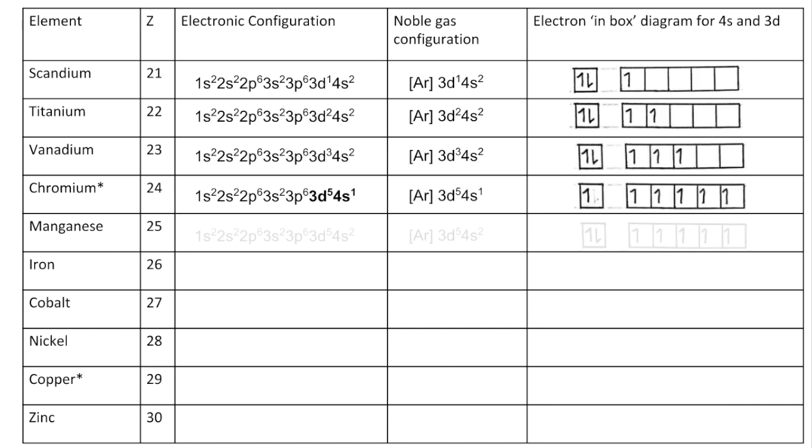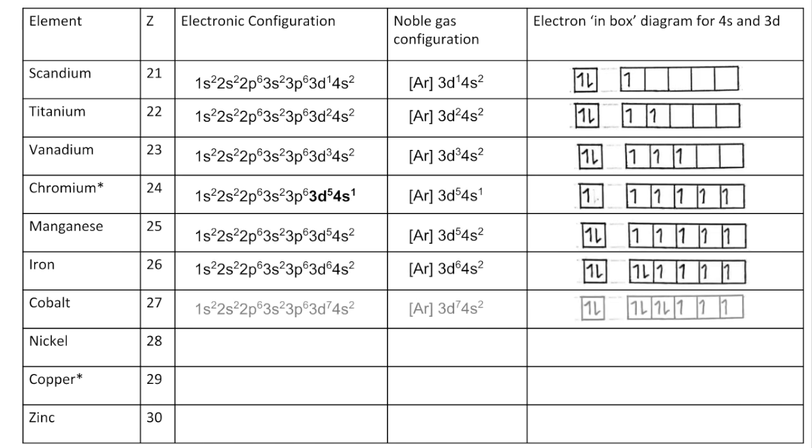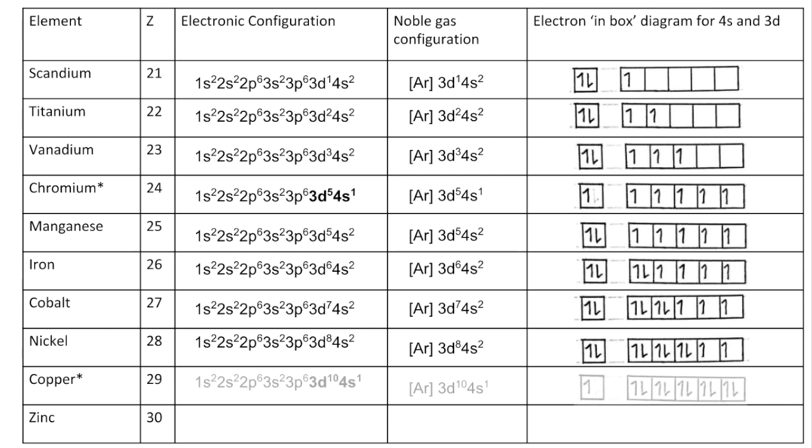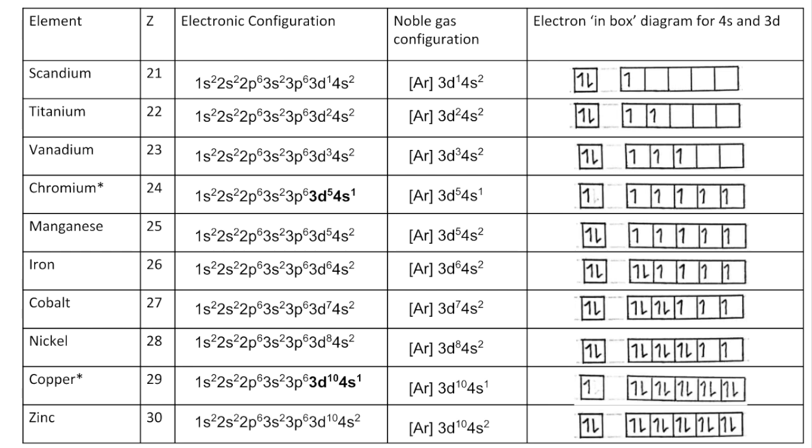The pattern picks up again until we get to copper where it does a similar thing to chromium. Instead of being 3D9 4S2, it promotes one of the 4S electrons so we get 3D10 4S1. Then zinc finishes off the pattern like that.